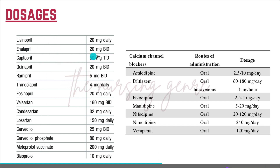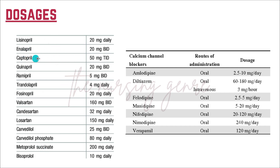Doses for renin-angiotensin system inhibitors: lisinopril 20 mg, enalapril 20 mg, captopril 20 mg. For ARBs, valsartan 160 mg or aliskiren 150 mg. These are basic doses and can be adjusted based on patient condition by the physician.